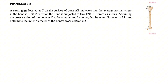We have a strain gauge located at point C on the surface of a bone AB that indicates the average normal stress in the bone is 3.8 megapascal when the bone is subjected to two 1200 Newton forces as shown on the two ends of the bone. Assuming the cross-section of the bone at point C to be annular, and knowing that its outer diameter is 25 millimeter, we need to determine the inner diameter of the bone's cross-section at point C.